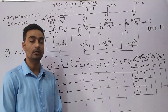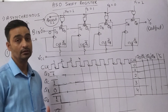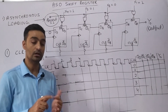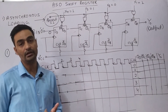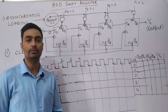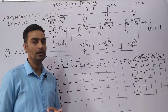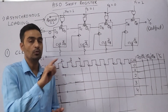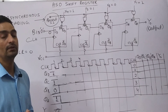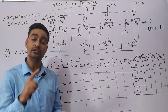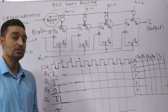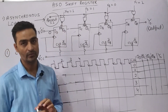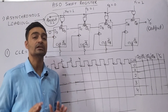When we talk of asynchronous loading in a parallel-in serial-out shift register, that means we will be using asynchronous pins. The asynchronous pins available in a D flip-flop are the clear pin and preset pin. Loading of data onto the flip-flop will be done through the clear pin and preset pin. Whenever we apply binary 0 to the clear pin, output goes to 0, and whenever we apply binary 0 to the preset pin, we get output as binary 1 in any flip-flop. This operation is independent of the clock — that's why we say it is asynchronous.